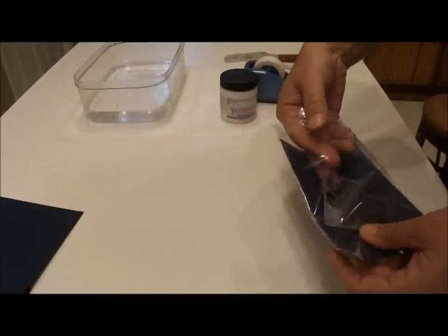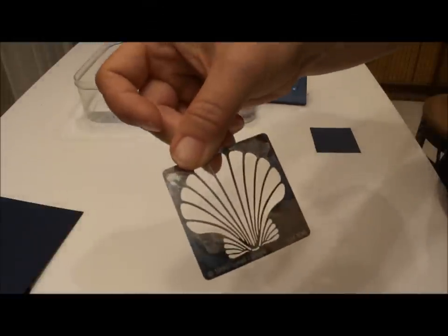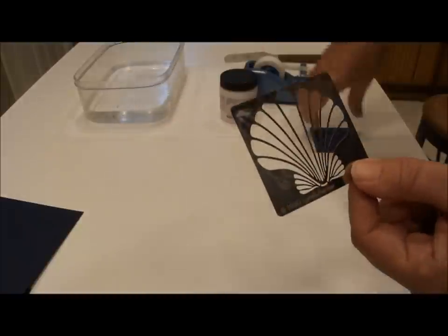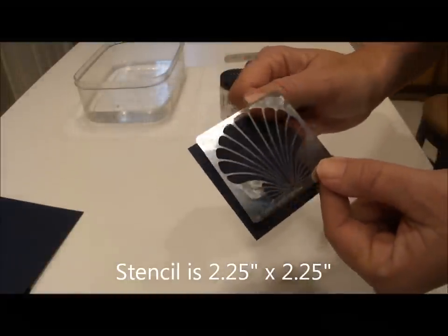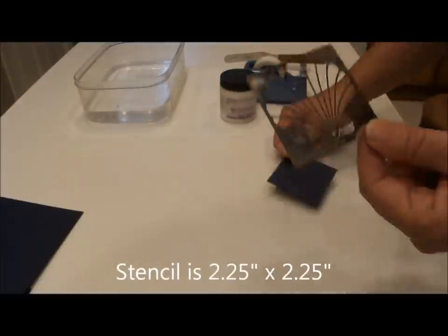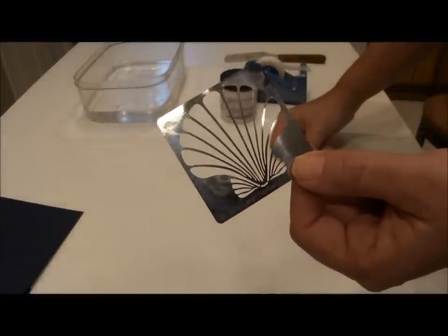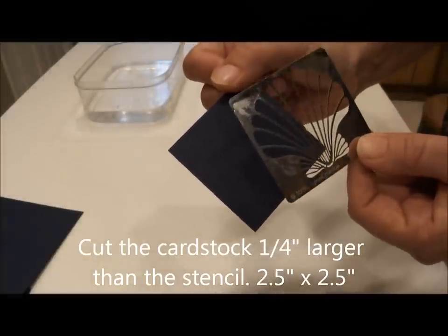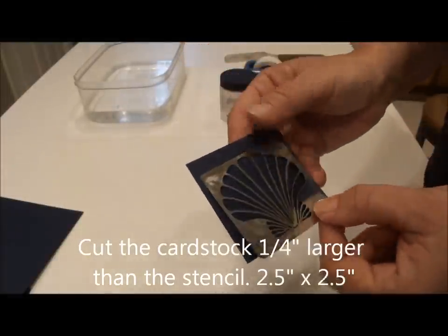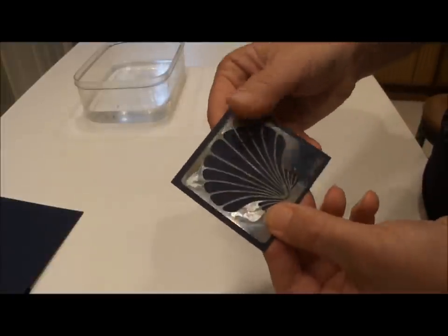So the first thing I did was I measured the stencil so that I can get an accurate size of paper to emboss with the embossing paste. This stencil is two and a quarter inches by two and a quarter inches. So I cut my paper two and a half inches by two and a half inches so that I have area that I can tape the stencil down when using the paste.